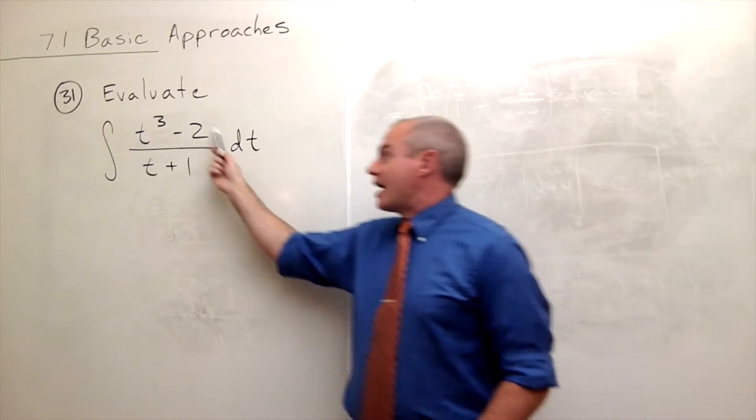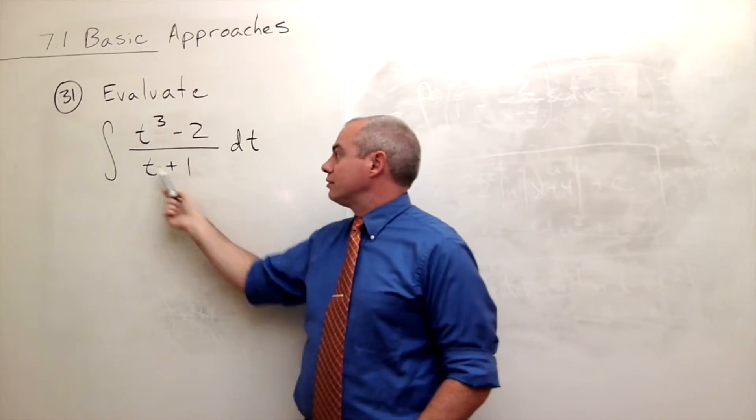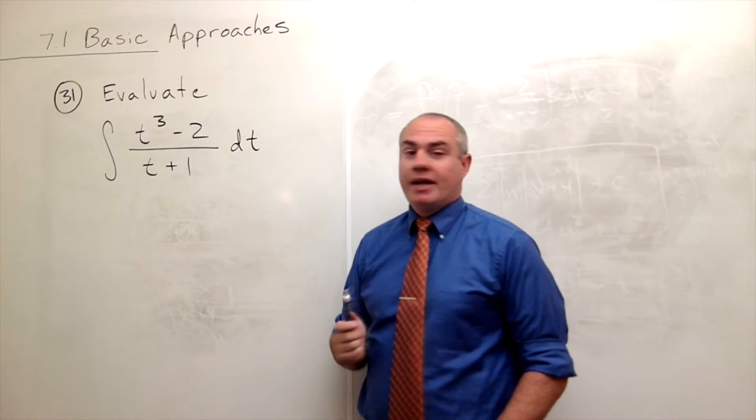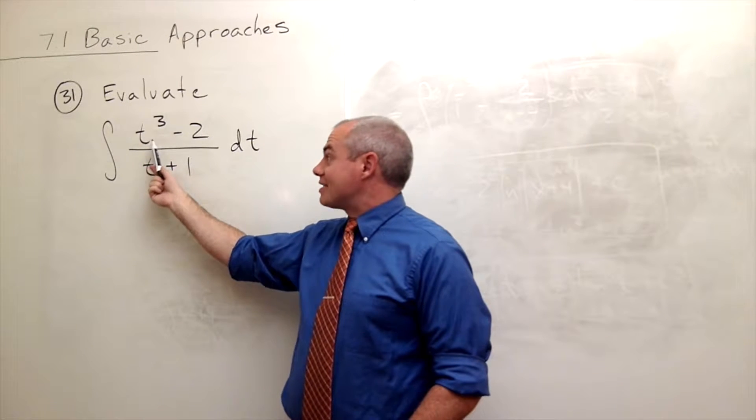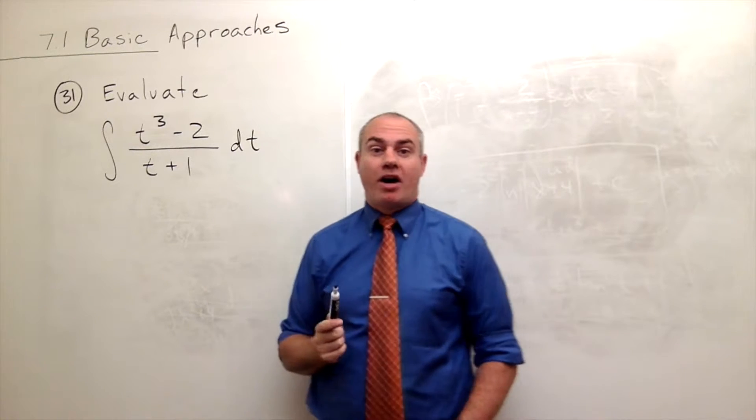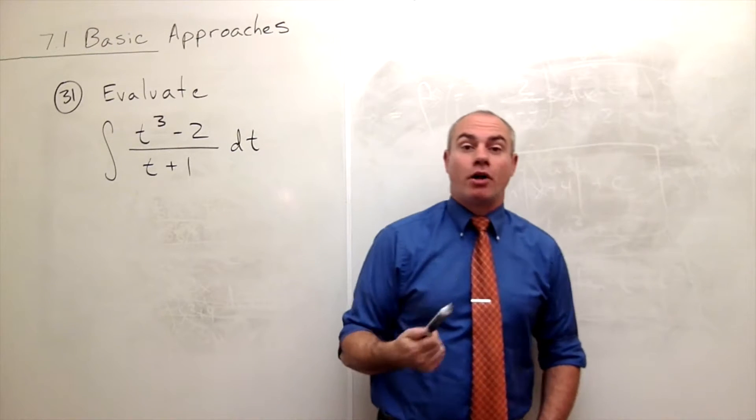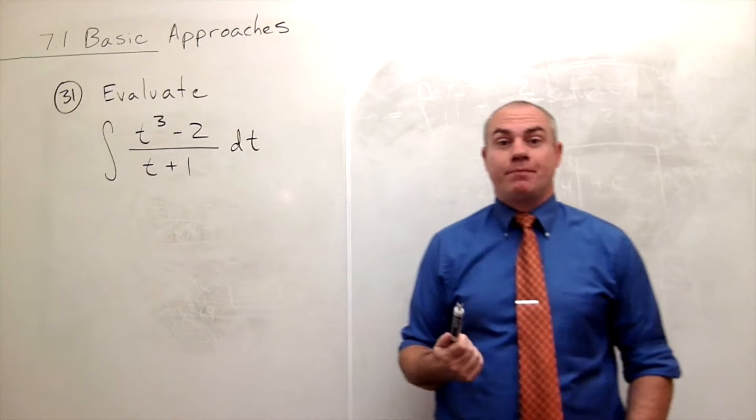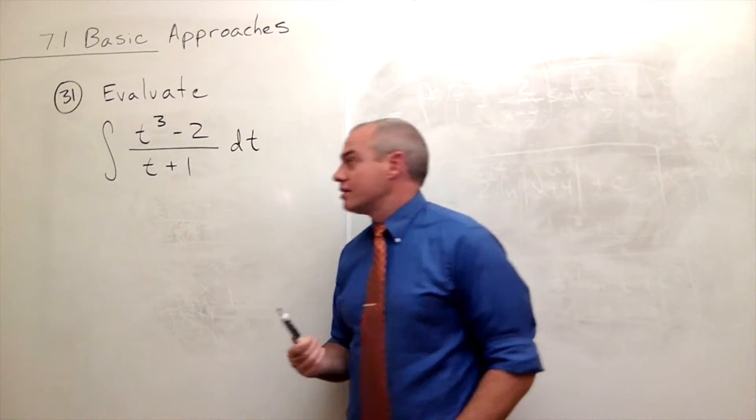First thing I see here is I have a rational function inside the integral and that the highest power of t on the top is greater than the highest power of t on the bottom, which means that I could use polynomial division to simplify this expression down. So let's do it.